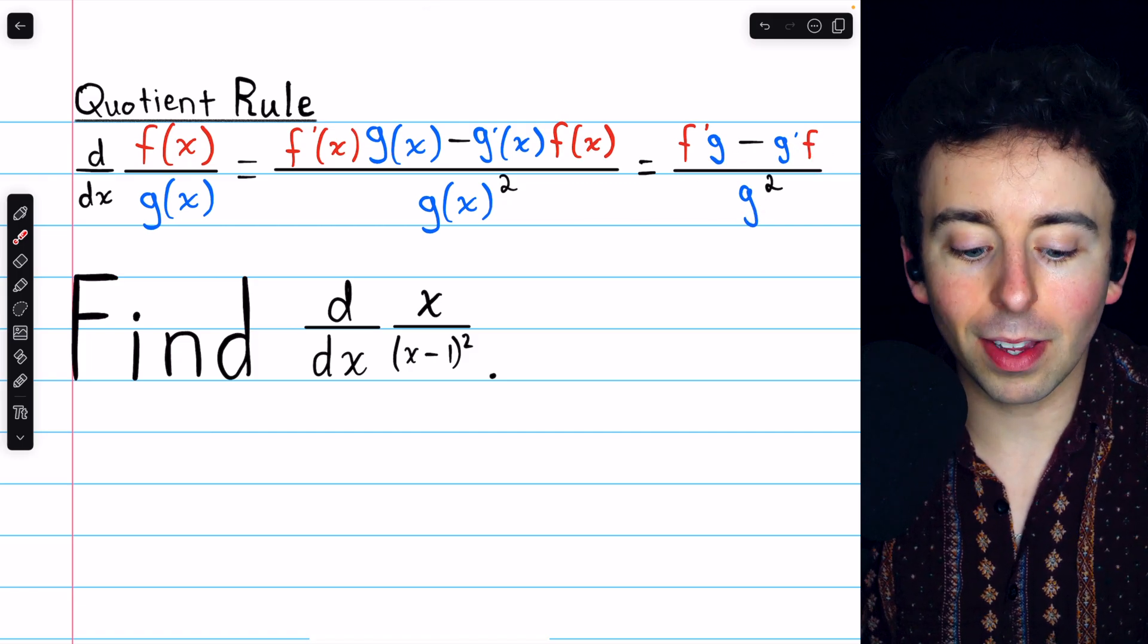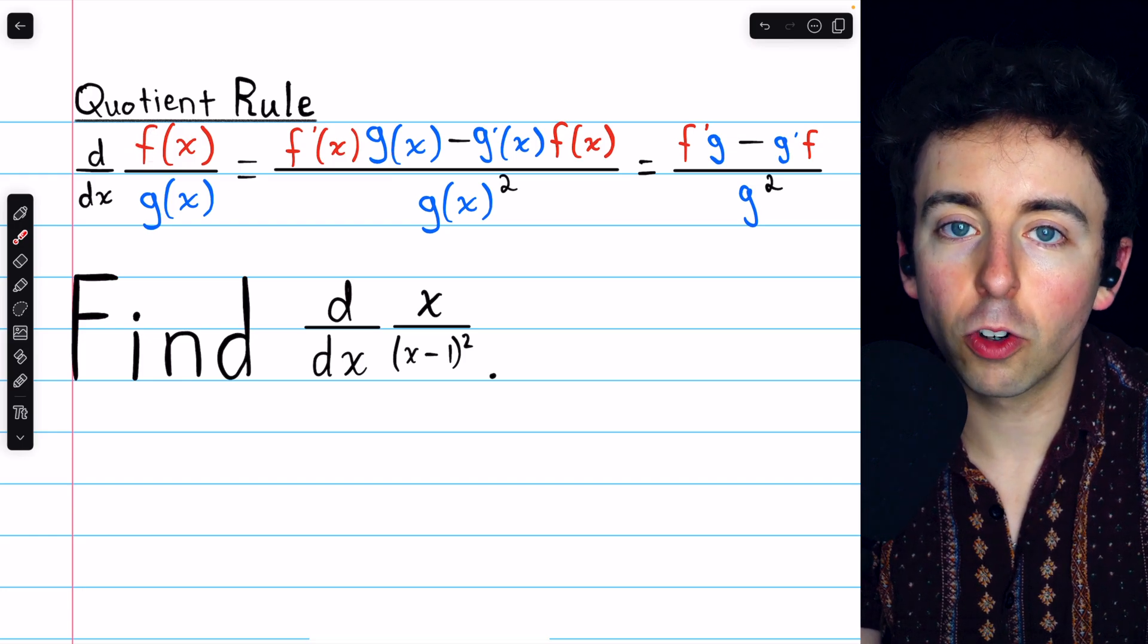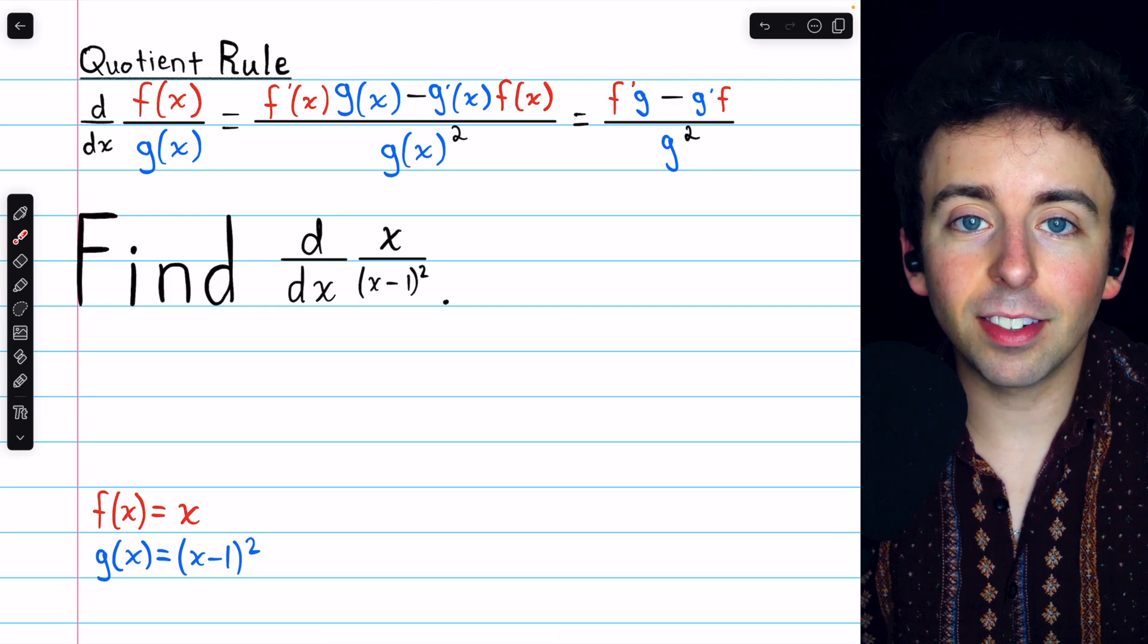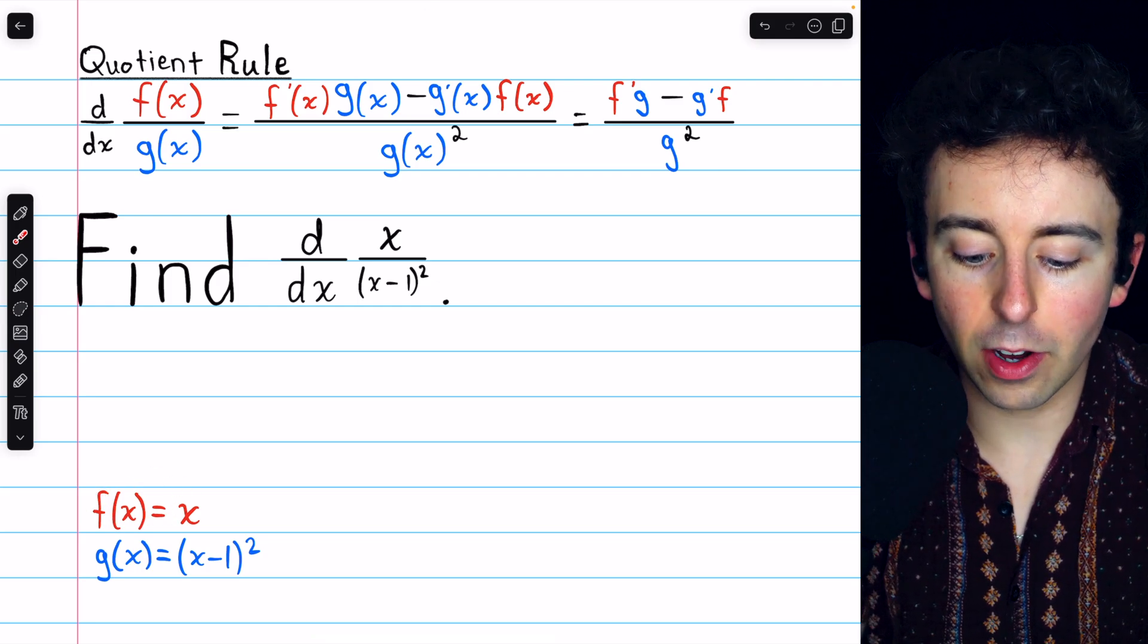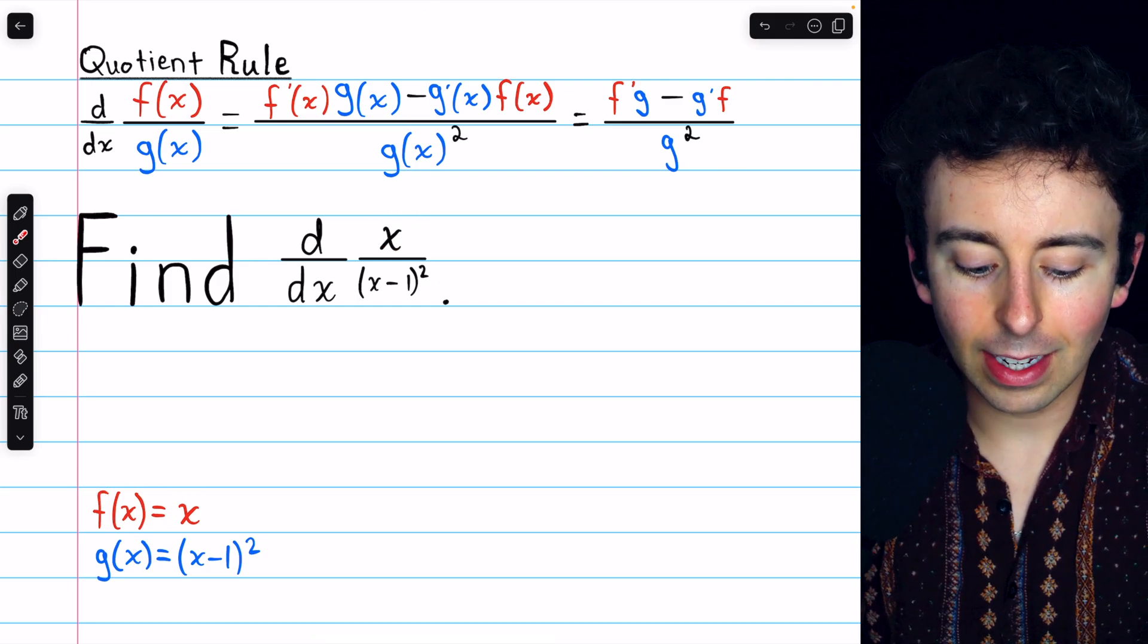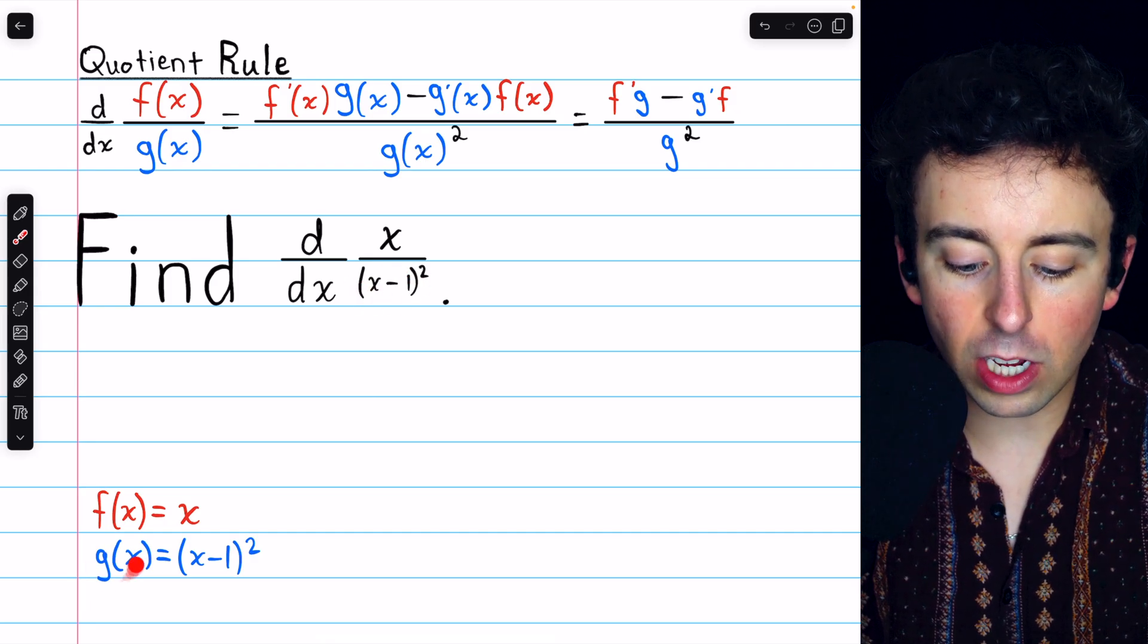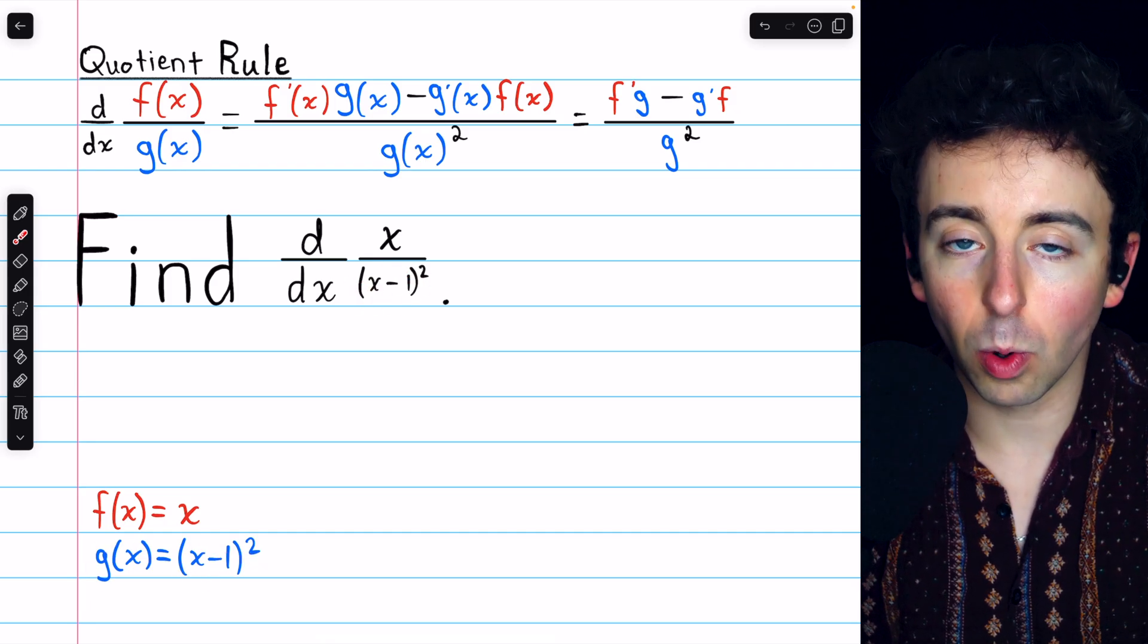To apply this rule, we must identify f, our function in the numerator, and g, our function in the denominator. It's clear in this case that the function in the numerator, which we call f of x, is x. And the function in the denominator, which we call g of x, is x minus 1 squared.